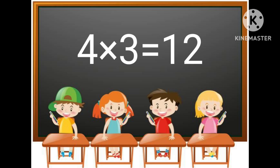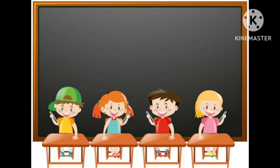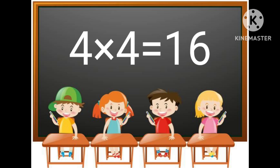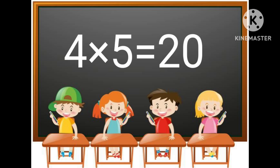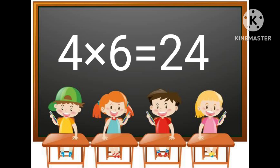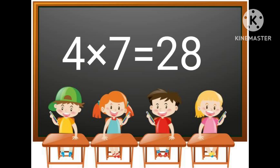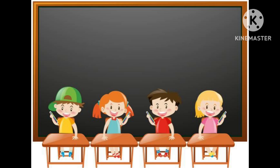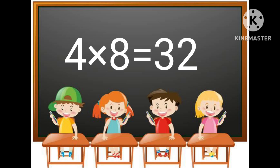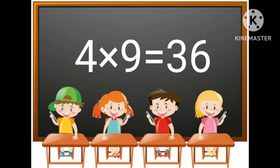4 multiplied by 3 is equal to 12. 4 multiplied by 4 is equal to 16. 4 multiplied by 5 is equal to 20. 4 multiplied by 6 is equal to 24. 4 multiplied by 7 is equal to 28. 4 multiplied by 8 is equal to 32. 4 multiplied by 9 is equal to 36.